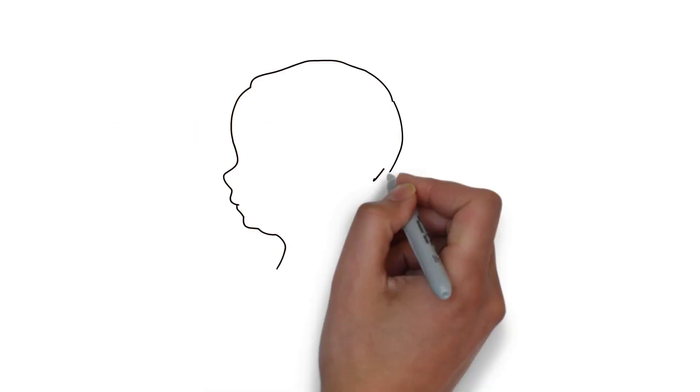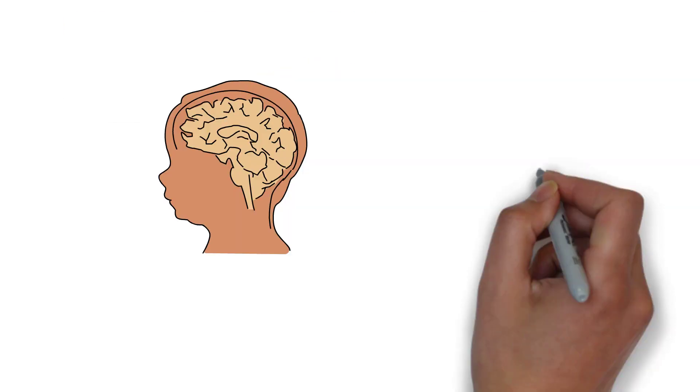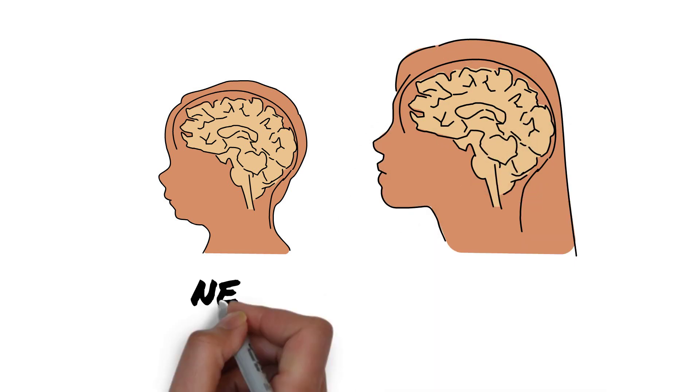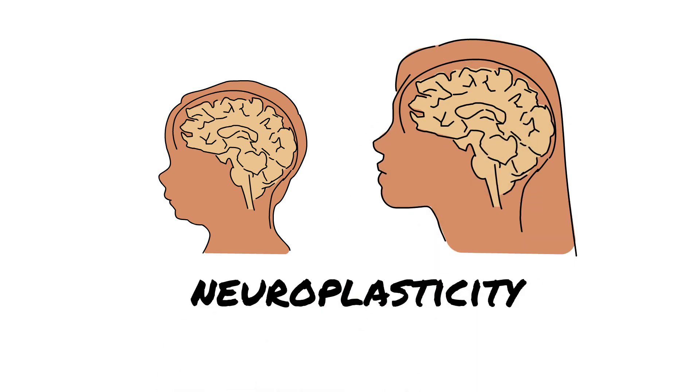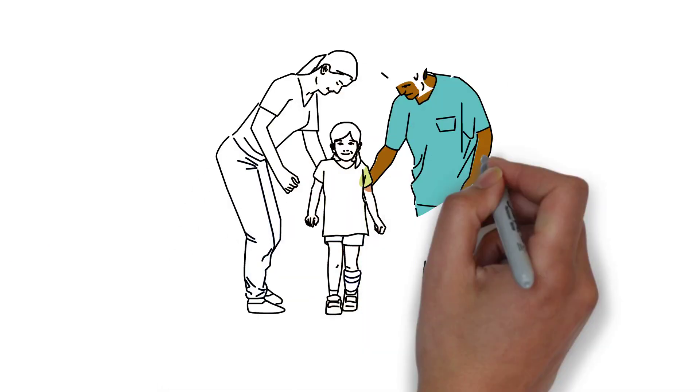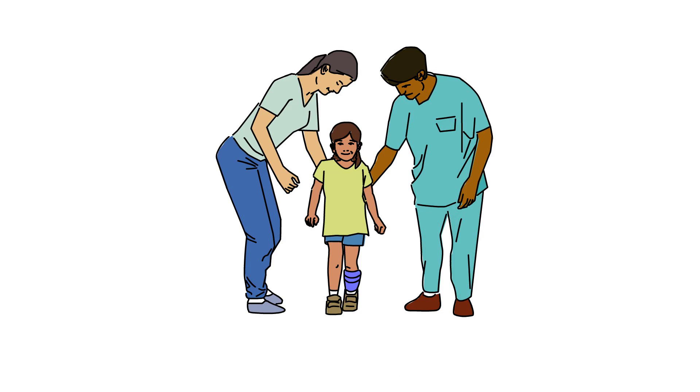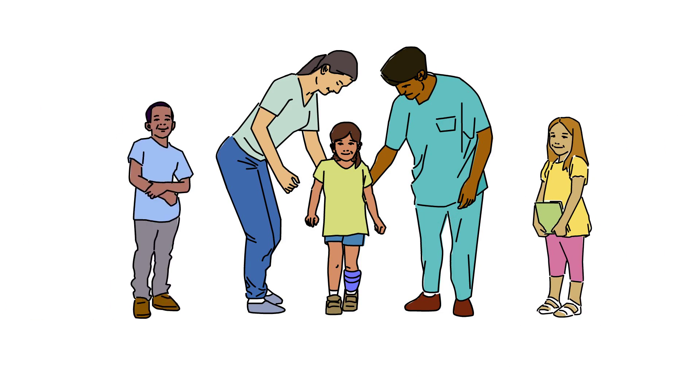Fortunately, the newborn brain is adaptable and can respond to a stroke different to an adult brain. This is called neuroplasticity. Because of neuroplasticity, Kate is expected to reach developmental milestones. This may be at a different pace than her peers, and she may require some extra help.